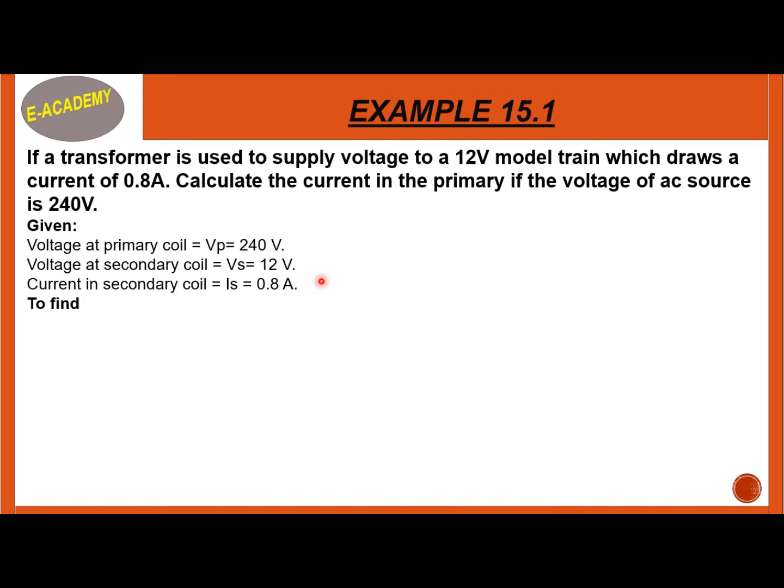Find current in primary coil IP. What formula will we apply here? IP times VP is equal to IS times VS.